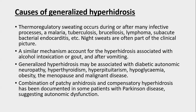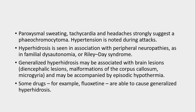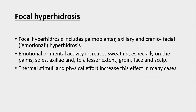Combination of patchy anhidrosis and compensatory hyperhidrosis has been documented in Parkinson's disease, suggesting autonomic dysfunction. Paroxysmal sweating, tachycardia, and headaches strongly suggest phaeochromocytoma, with hypertension also noted during attacks. Hyperhidrosis is seen in association with peripheral neuropathies such as familial dysautonomia or Riley-Day syndrome. It may also be associated with brain lesions, diencephalic lesions, malformation of the corpus callosum, and microgyria — sometimes accompanied by episodic hypothermia. Drugs like fluoxetine can also cause generalized hyperhidrosis.